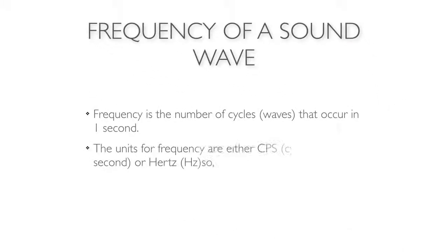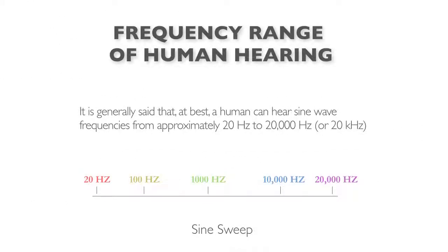Let's talk about the frequency of a sound. Frequency is simply the number of cycles per second. Sound represents a vibration, and that vibration has a number of cycles per second associated with it — the higher the pitch, the higher that number is. Frequency can be represented in cycles per second (cps) or hertz (Hz). Humans can only hear a certain range: 20 to 20,000 Hz is generally considered the greatest range. Most of us can't hear that full range — as you get older, you lose those high frequencies.